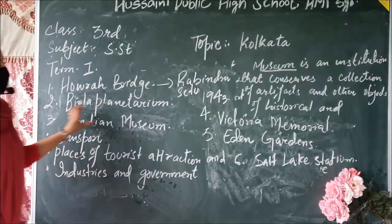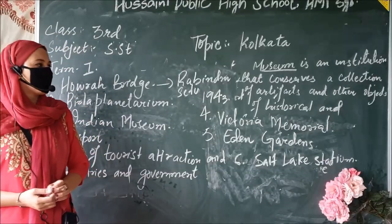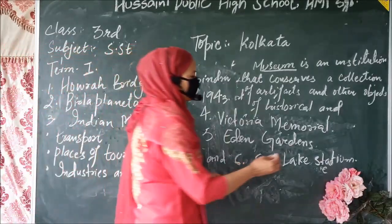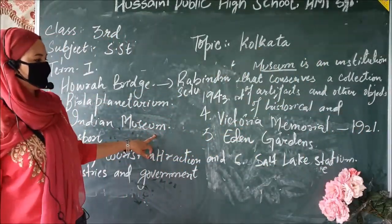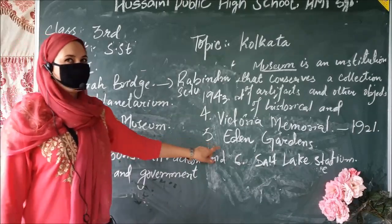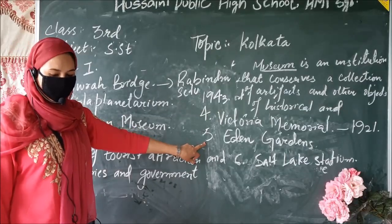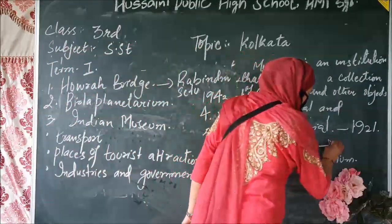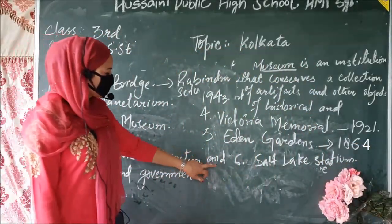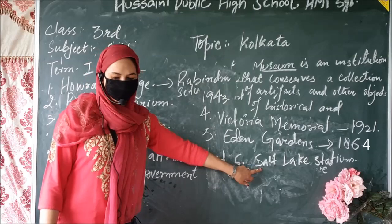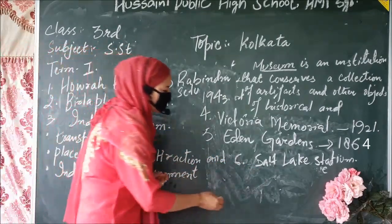Victoria Memorial is a marble museum built in 1921 in the memory of Queen Victoria of England. Eden Gardens is a cricket stadium in Kolkata and it was set up in 1864. Salt Lake Stadium is the largest stadium in India in terms of seating capacity.